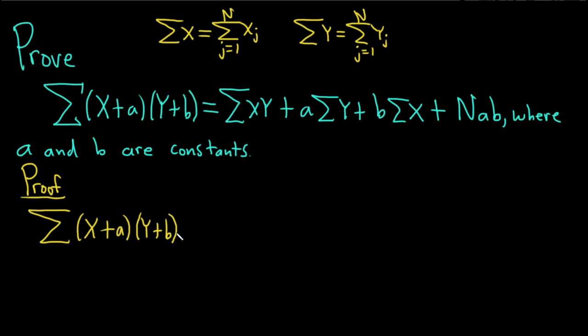Now we can multiply this out. So this is equal to the sum. Let's just distribute. x times y is xy. And then we have a times y, which is ay. So plus ay. Then we have x times b, which is simply bx. And then a times b is simply ab.